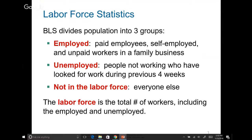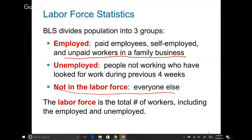So three categories. Employed is anybody who is a paid employee, self-employed, or unpaid worker in a family business — even though you're not getting paid in monetary terms, you are still working for your family, so you are still employed. Unemployed is anybody who is not working but is actively looking for a job for the last four weeks. And anybody who is not working and not looking for a job is not in the labor force. Labor force is the total of employed plus unemployed.